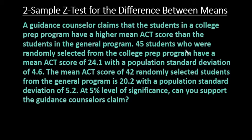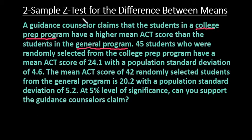The reason that we have a two-sample Z test is because we're comparing two different groups — those in the college prep program and those in the general program — and we're specifically looking at their ACT scores. The difference between a two-sample Z test and the two-sample T test is what type of standard deviation you have. If you have a sample standard deviation, you use a two-sample T test. If you have the population standard deviation, which we do, then we use the two-sample Z test.